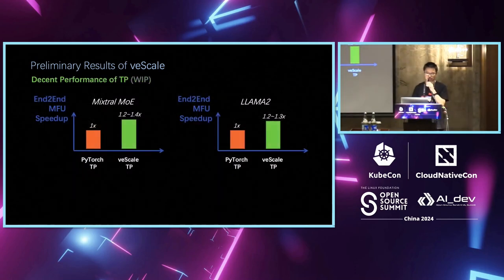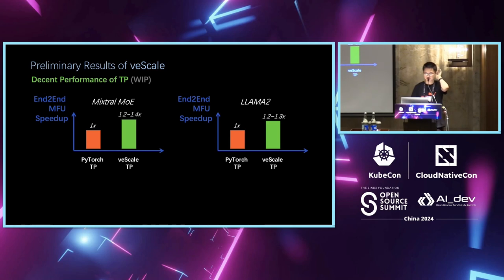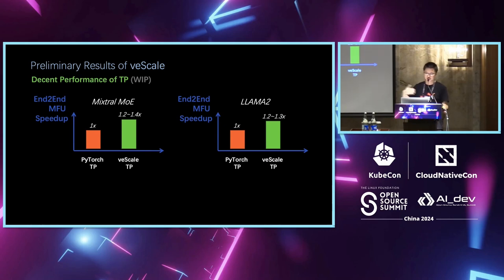For performance, comparing against Torch Titan, we achieve 20 to 30% improvements on MFU for Mixtral and Llama2. We're still continuously improving performance — not just for open source models, but also for our business models inside TikTok.